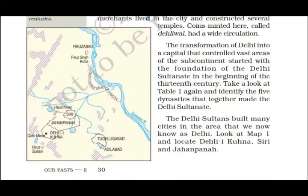The transformation of Delhi into a capital that controlled vast areas of the subcontinent started with the foundation of the Delhi Sultanate in the beginning of the 13th century. Delhi became a capital that ruled over the entire subcontinent. As you can see in Map 1 — selected Sultanate cities of Delhi in the 13th and 14th centuries — the Delhi Sultans built many cities in the area we now know as Delhi, expanding outward to places like Siri.